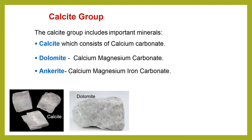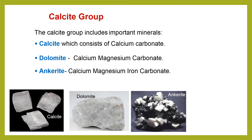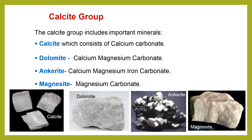So you can see we start with only calcium carbonate, then we have calcium with magnesium, then we have calcium, magnesium, and iron. Here is a picture of ankerite — the white crystals. Magnesite, as its name suggests, is pure magnesium carbonate. So magnesite is magnesium carbonate and calcite is calcium carbonate, while the other two have a mix of calcium-magnesium or calcium-magnesium-iron. Here is a picture of magnesite.